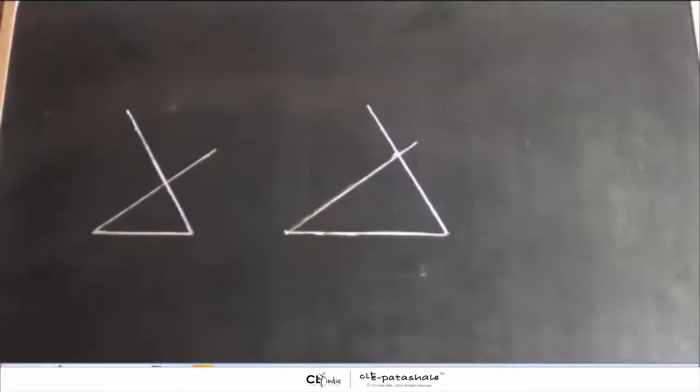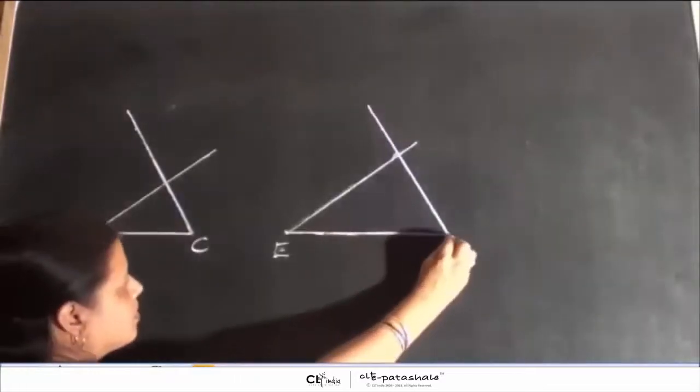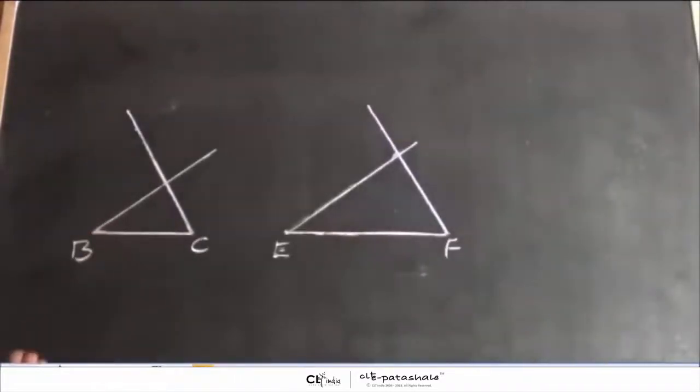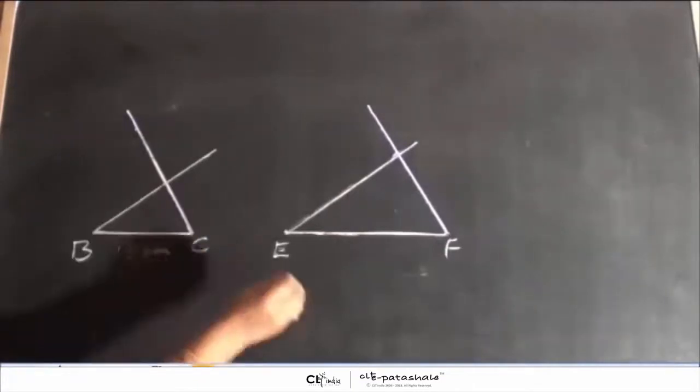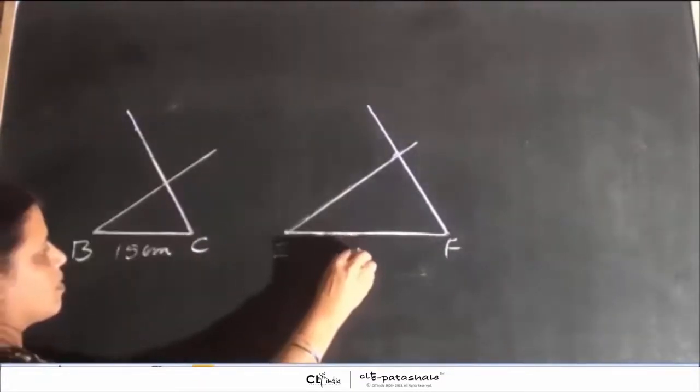Hello children, today we will do an activity. As you can see, we have drawn two triangles on the board. First of all, we will draw line segments BC and EF. The length of BC is equal to 15 cm and length of EF is 25 cm.